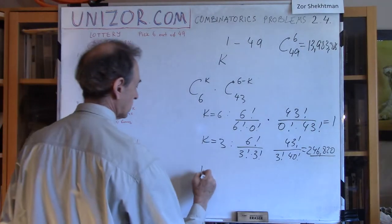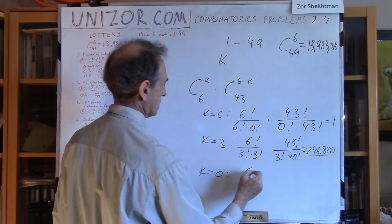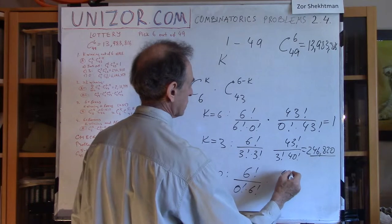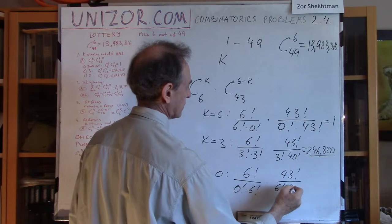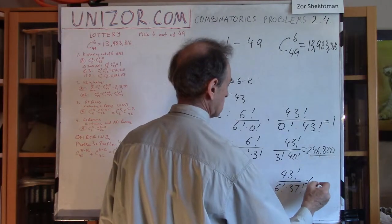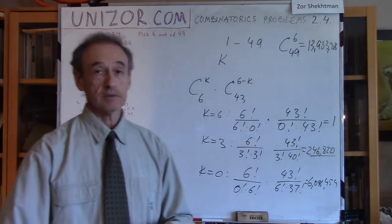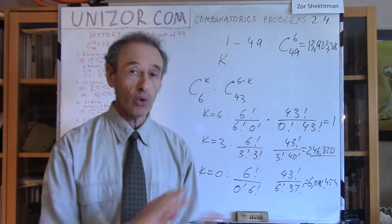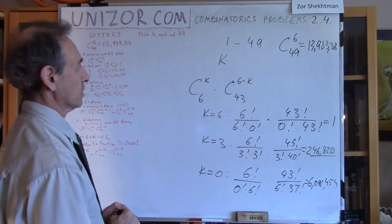Finally, I calculated this for k equals zero. That would be C(6,0) × C(43,6), and this is actually a large number: 6,096,454. So it's about six million. Six million out of almost 14 million is almost half. So almost half of all the combinations have absolutely no winning numbers among them — that's the most frequently occurring combination.